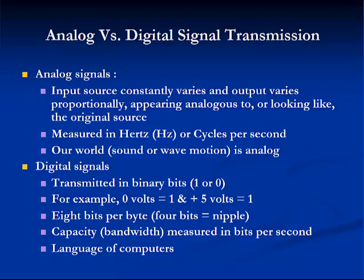Analog refers to signals that use variable voltages to create continuous waves, resulting in an inexact replica of the original message. Digital signals are composed of pulses of zero voltage and precise positive voltage that represent values of either zero or one, respectively. The use of ones and zeros to encode information is known as a binary system. Every pulse in the digital signal is called a binary digit or bit. A bit can only have a value of one or zero, which equates to on and off respectively. Eight bits together form a byte.